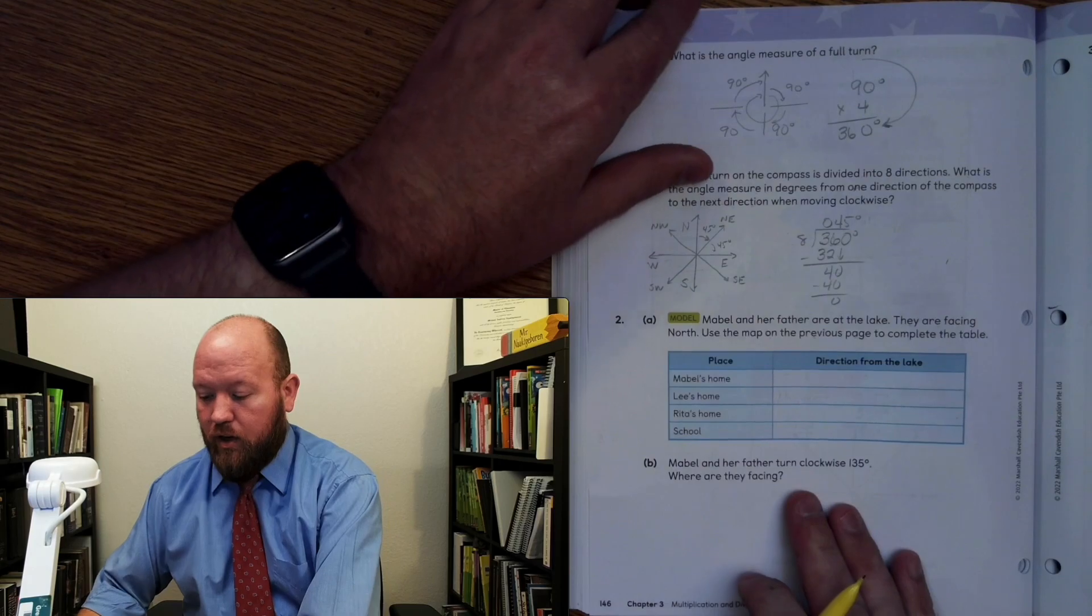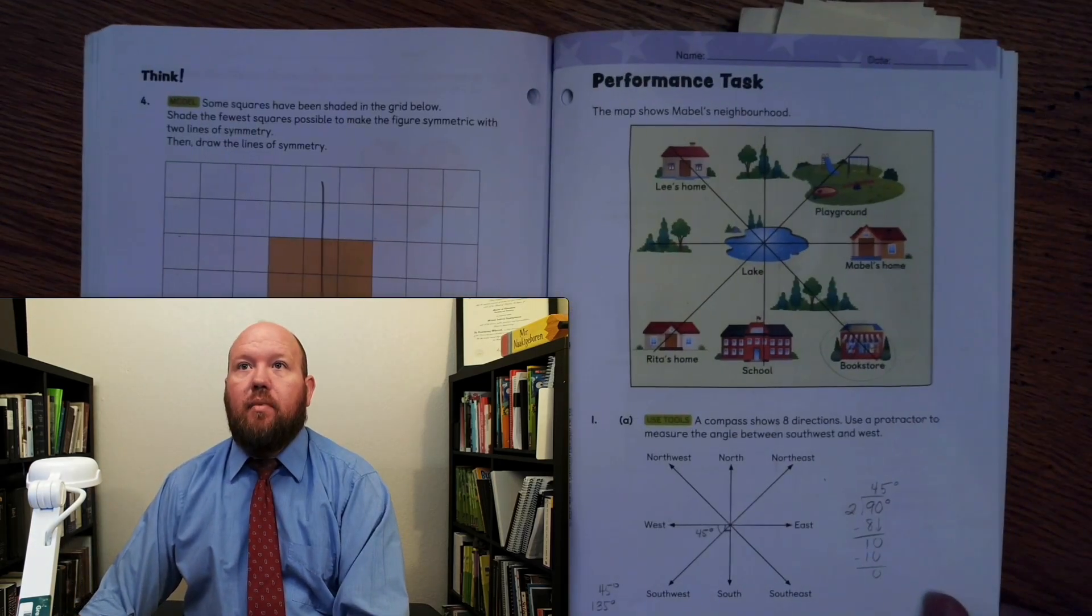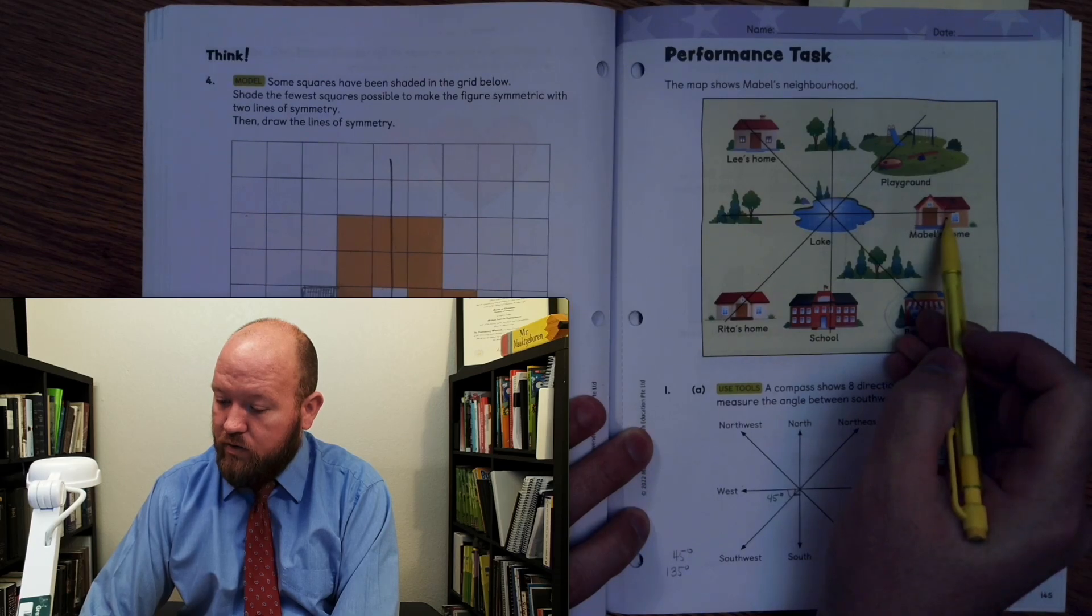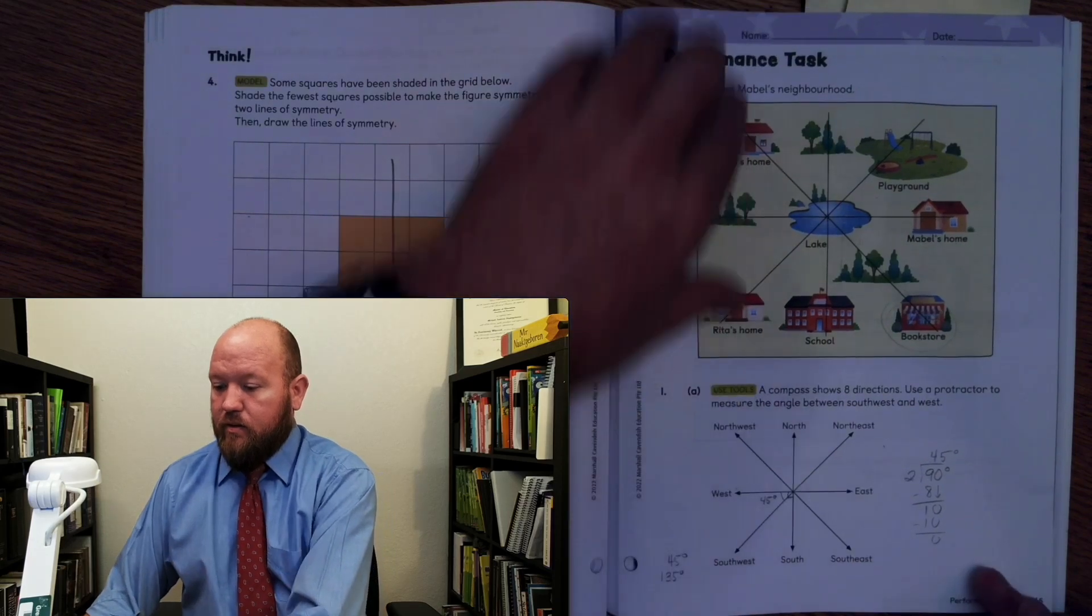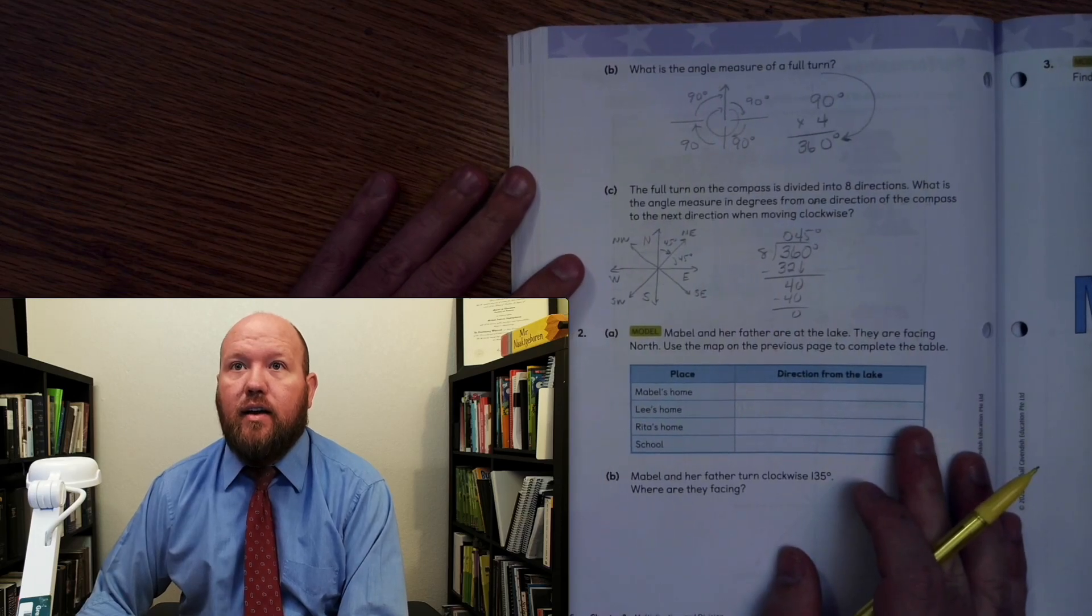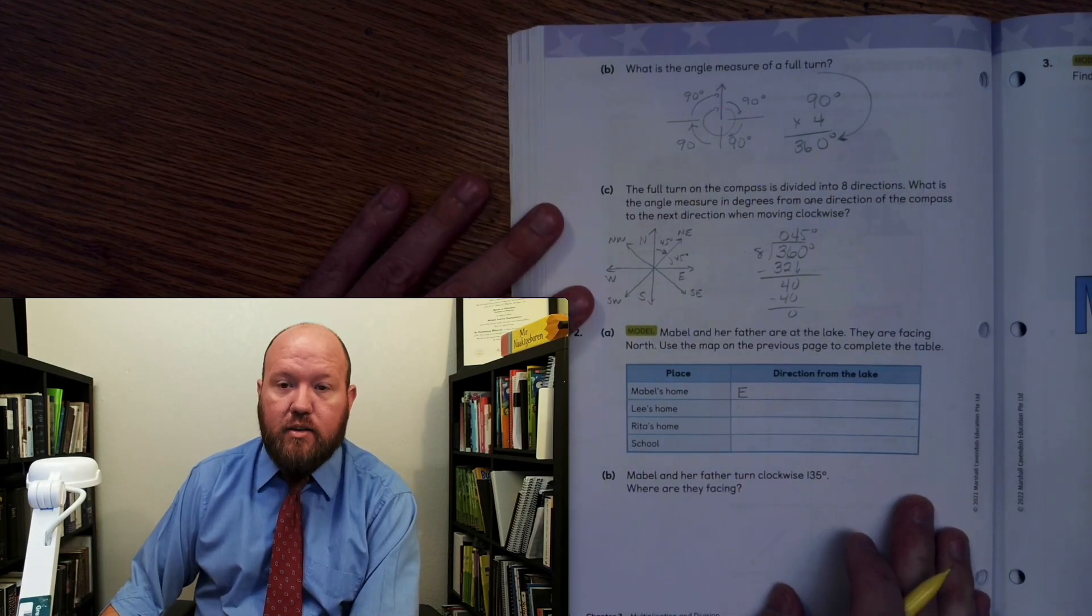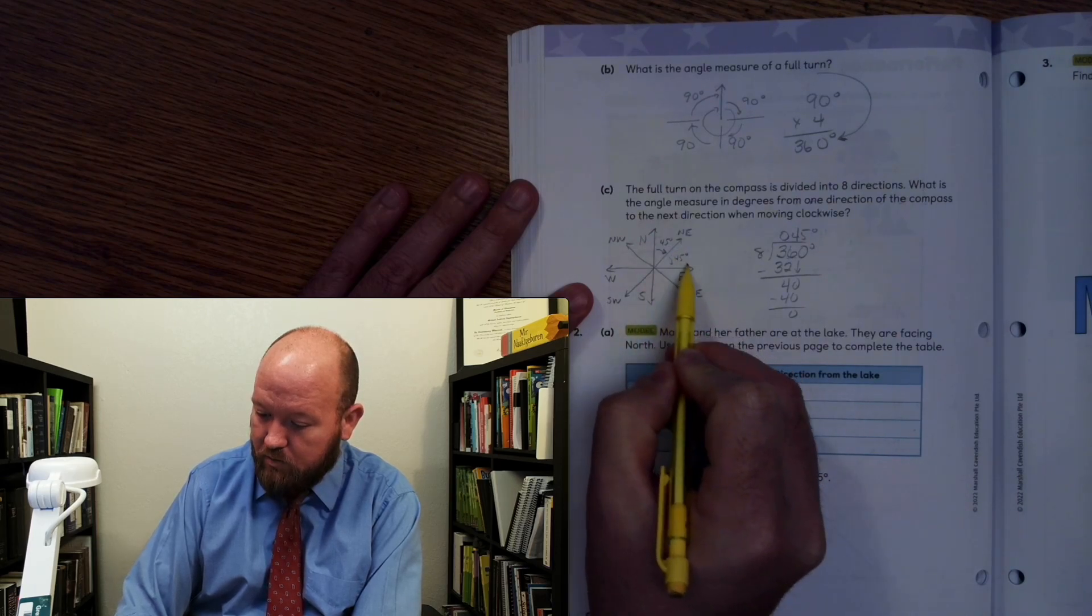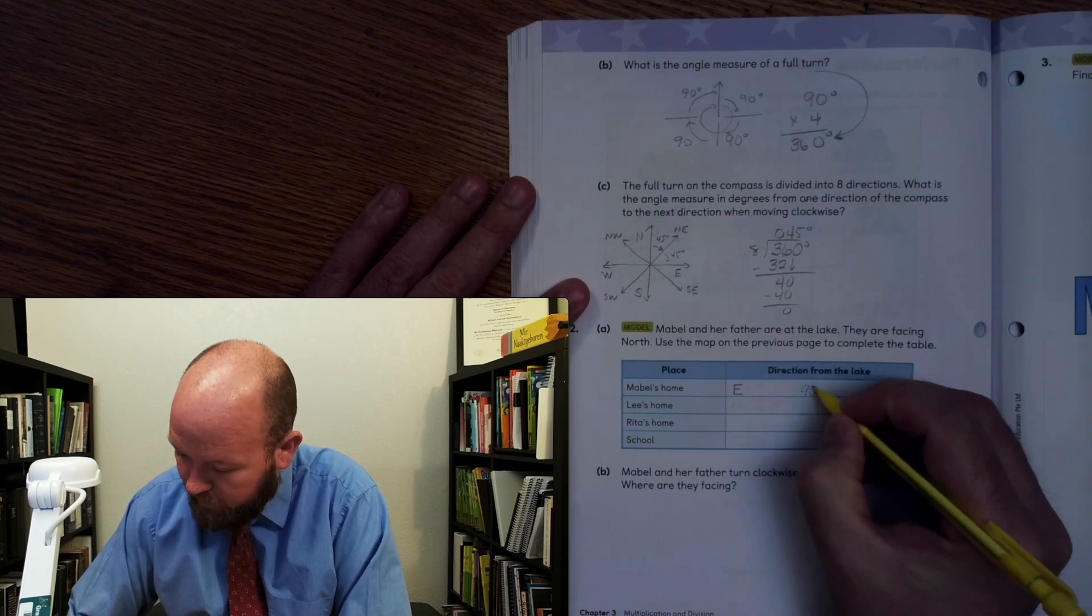So let's go look at Mabel's home. All right. So Mabel's home is located due east. Okay. So if you're in the middle of the lake, it's straight east. So Mabel's home is east. So how many degrees would we have to go to face east? Well, we would go from here to here. That's straight. That's just a right angle. And so it's going to be 90 degrees.